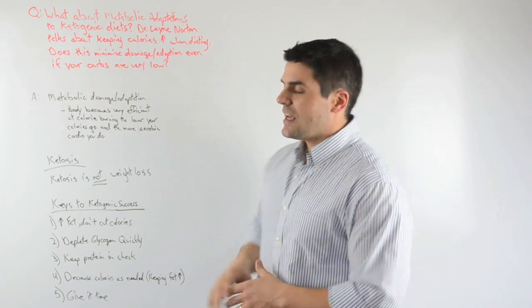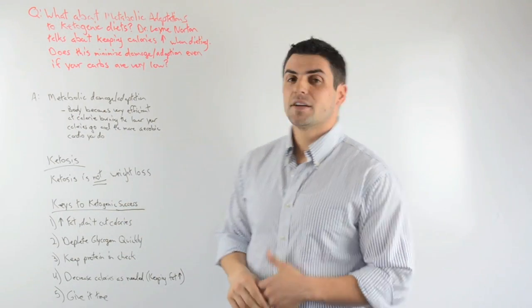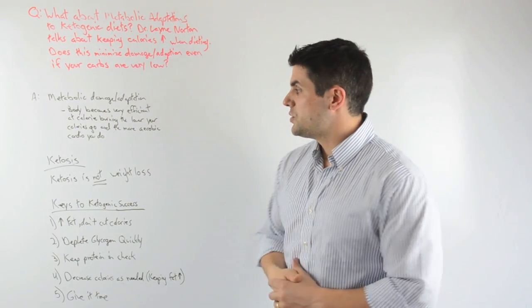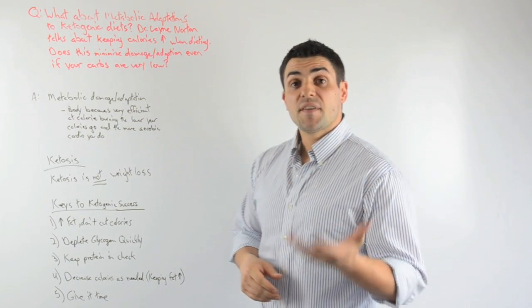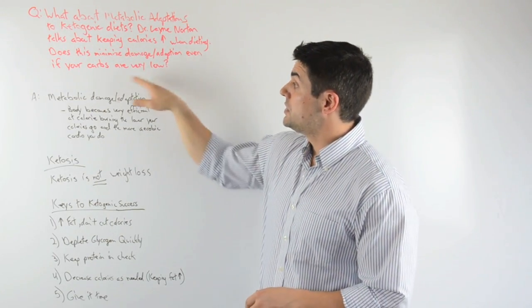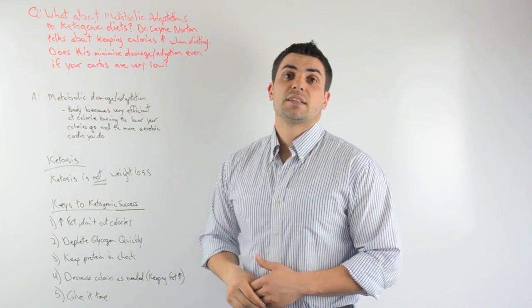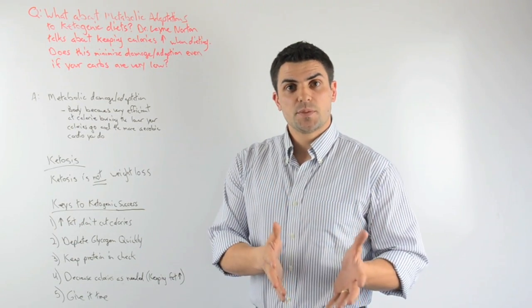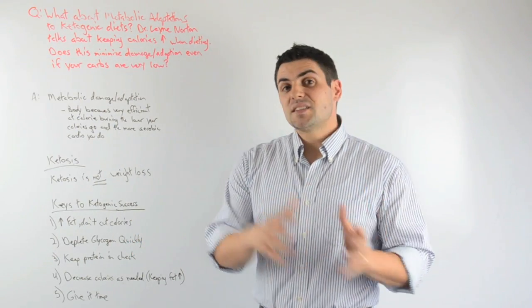So how can you take a ketogenic diet, which is a great, effective, safe dietary protocol, and minimize the metabolic damage and adaptation if you're trying to use it to lose weight? Here are five things. The first thing is when you first get onto a ketogenic diet, increase the fat in your diet but don't cut calories. This really gets back at the question: can you keep calories up even though carbs are very low to minimize this adaptation?